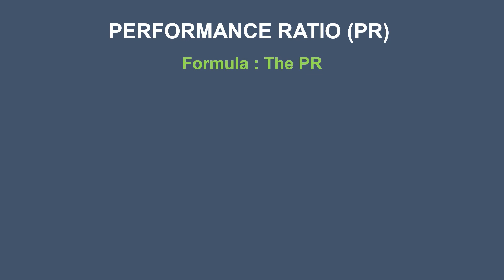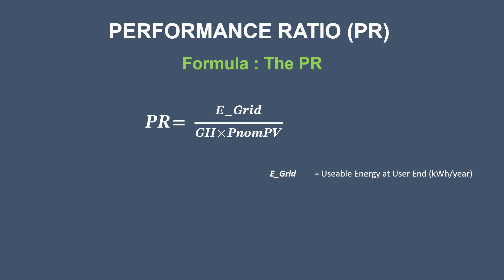Now let's see the formula for PR. PR equals E-grid divided by the product of GII and PNOM-PV. Here, E-grid is the usable energy available at the user end, with units of kWh per year. GII refers to the global inclined irradiation received by the solar PV array at a certain tilt angle. PNOM-PV is the solar PV array's installed DC capacity, with units of kWp (kilowatt peak).